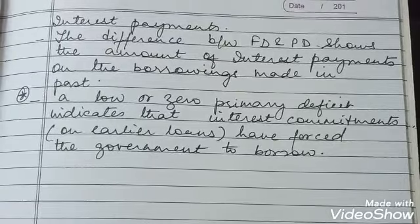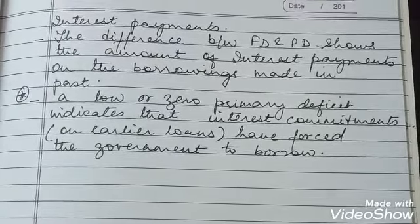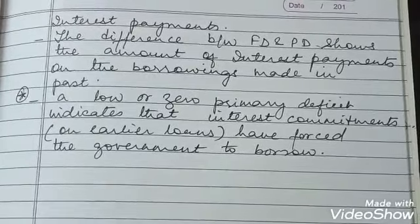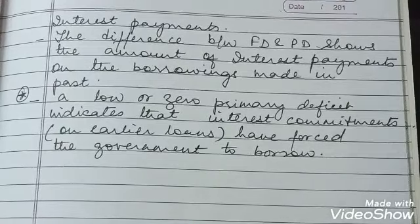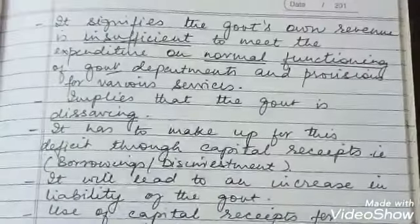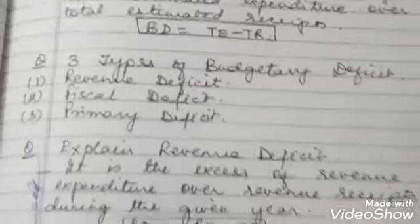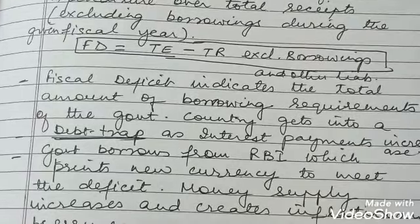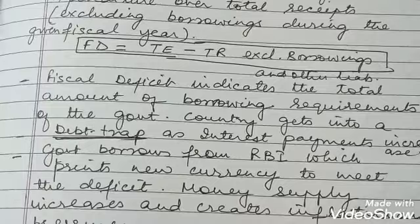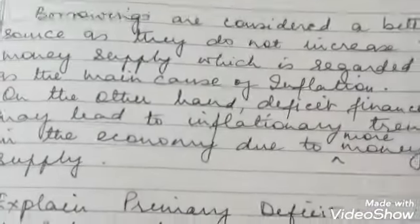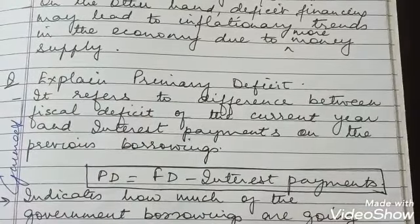In summary, we have covered the balanced budget, surplus budget, and deficit budget. Among deficit budgets, we studied three types: revenue deficit, fiscal deficit, and primary deficit. The formulas are: revenue deficit equals revenue expenditure minus revenue receipts; fiscal deficit equals total expenditure minus total revenue excluding borrowings and other liabilities; and primary deficit equals fiscal deficit minus interest payments. These formulas are very important as you may get numerical questions.